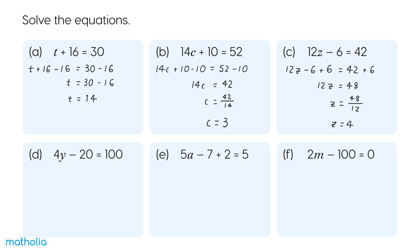D. 4Y minus 20 equals 100. Add 20 to both sides. 4Y equals 120. Divide both sides by 4. Y equals 30. We have solved the equation.